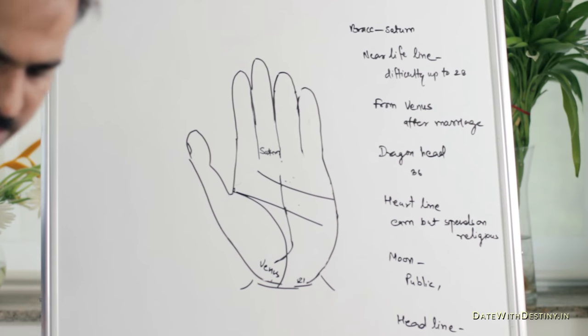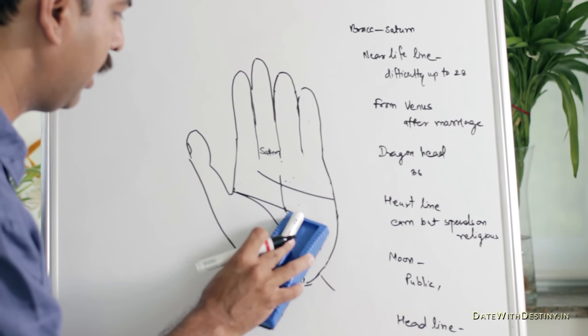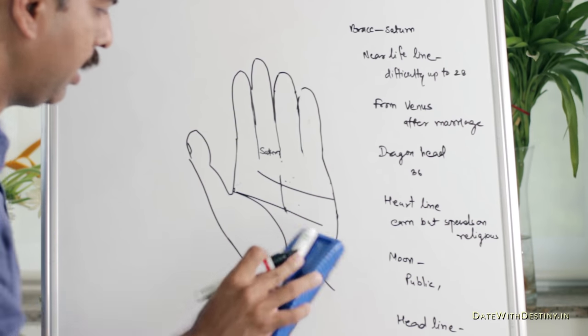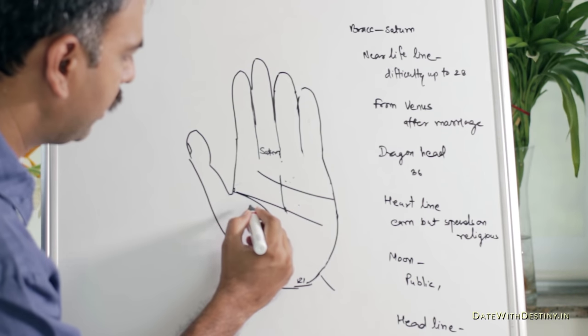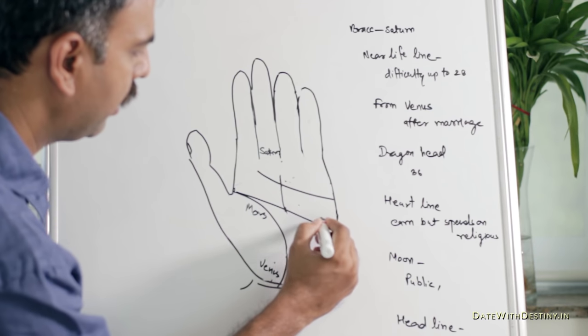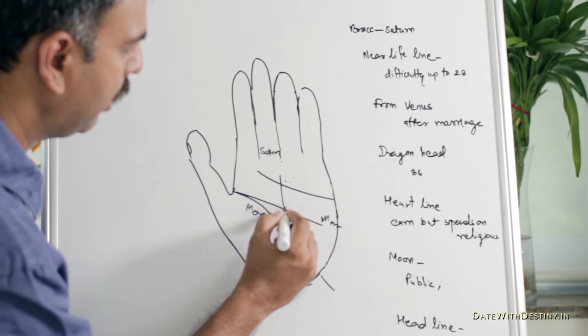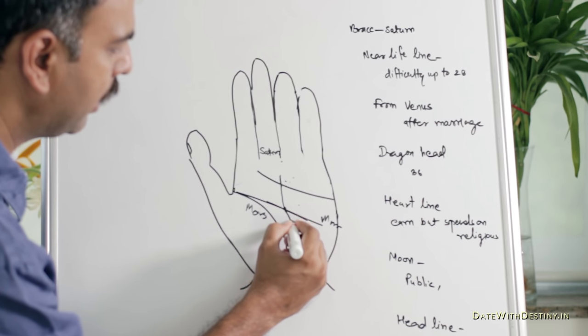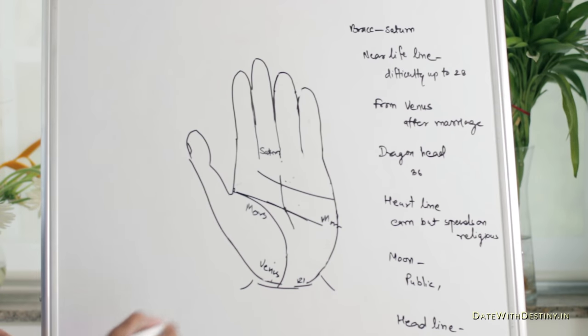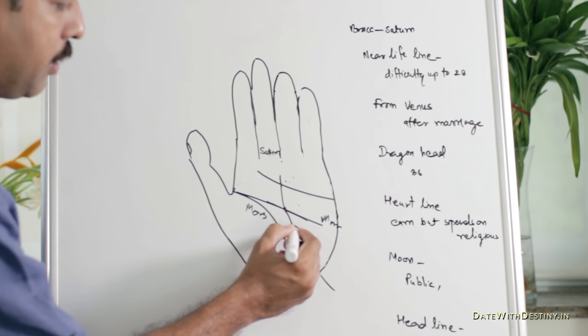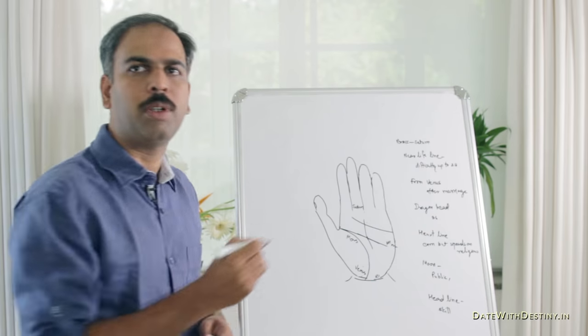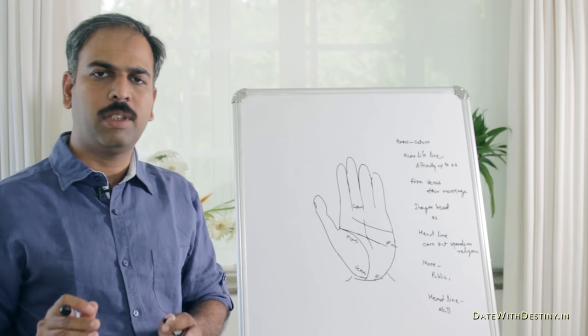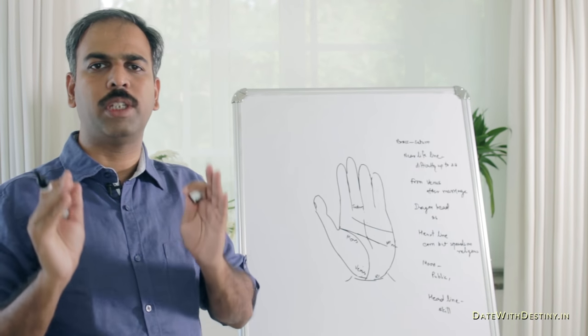Now, this is the area of Dragon Head in hand. This is the Mount of Mars, and this is the other Mars. Below the line of head and in between two Mars, this is the area of Dragon Head. If the line starts from this area and goes to the Mount of Saturn,